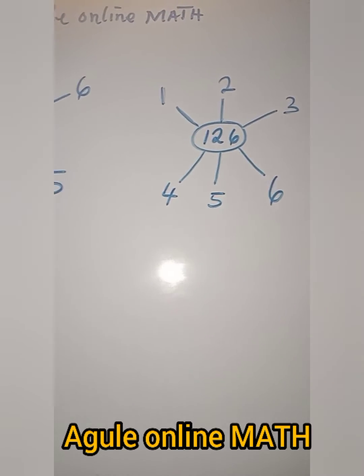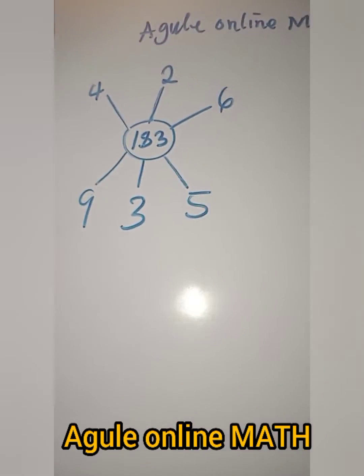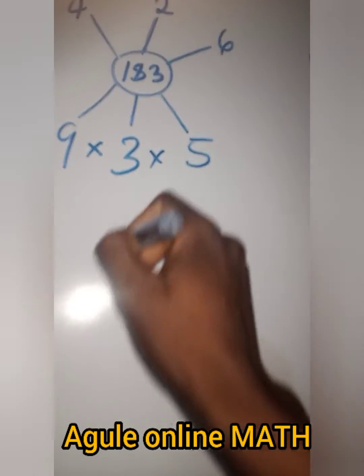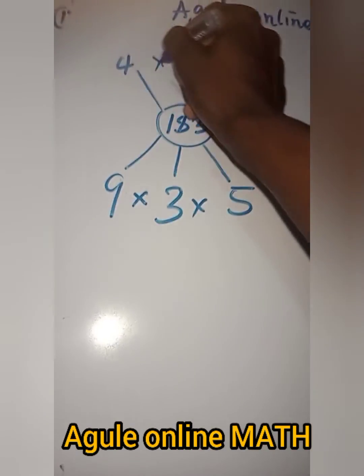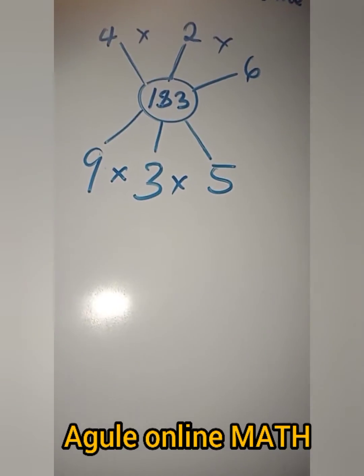It is very simple. This is how to get 183. We are going to multiply all the numbers down, then multiply the one up, then add everything together.